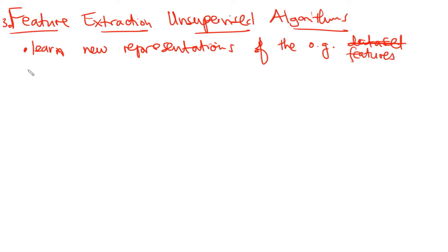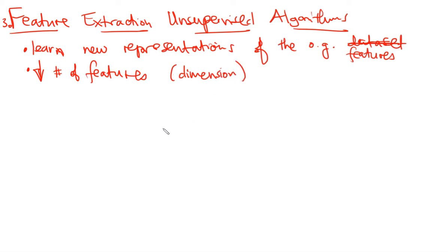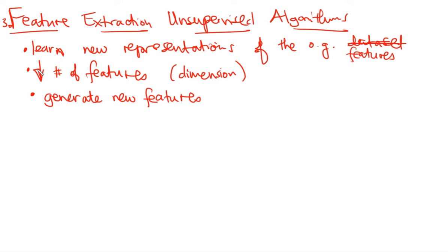Feature extraction can be used to reduce the number of features from the original number in the data set to a smaller set — this is effectively dimension reduction. Or we can use these algorithms to generate new features, new feature representations, to help with our machine learning model, such as a supervised machine learning model.